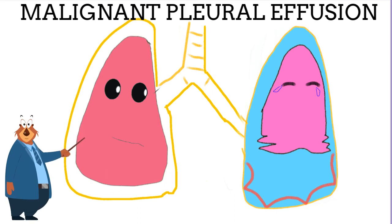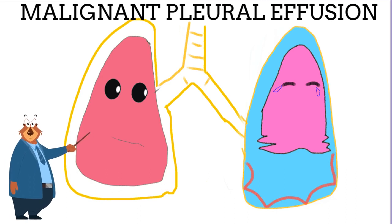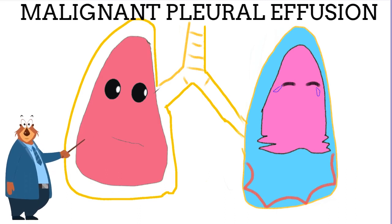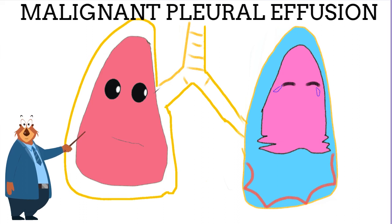Hello everyone, today our topic is malignant pleural effusion. On the left hand side is a normal lung. It is covered by pleura, which is a double layer membrane covering the lung, and normally there shouldn't be more than 10 cc of fluid or water in the pleural cavity.